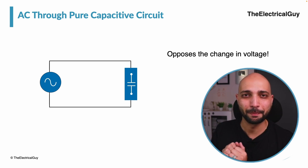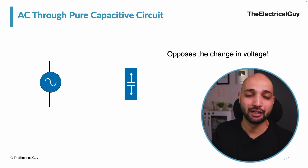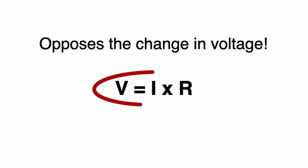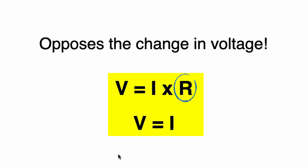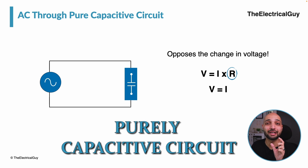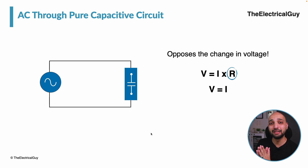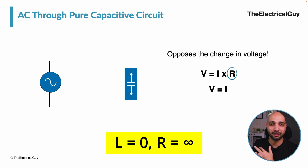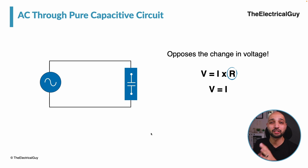A capacitor tries to control the voltage, and this takes us back to Ohm's law. Voltage is directly proportional to current provided resistance is constant, so if you control the current you can control the voltage — and that is the same principle used by a capacitor. Before we proceed, remember we are talking about a purely capacitive circuit, meaning zero inductance and infinite resistance.